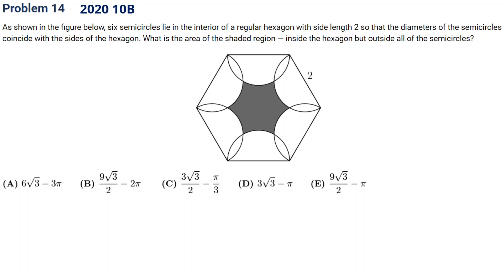Okay, let's take a look. The question asks for the area of the shaded region. We can reconstruct it as a regular hexagon. The area of a regular hexagon can be cut into six small equilateral triangles, so it's six times root three over four.